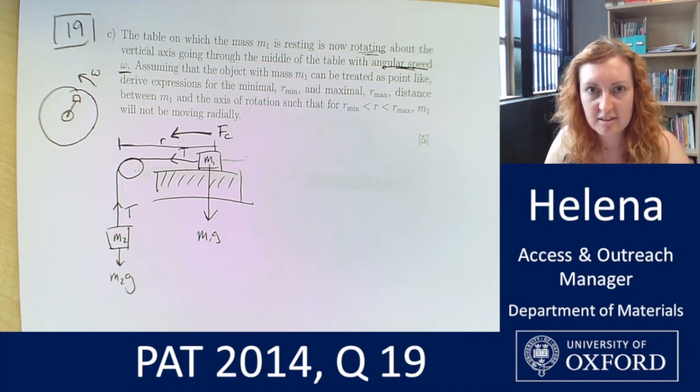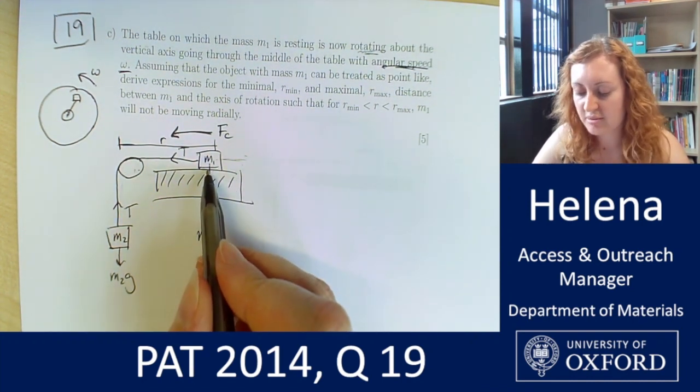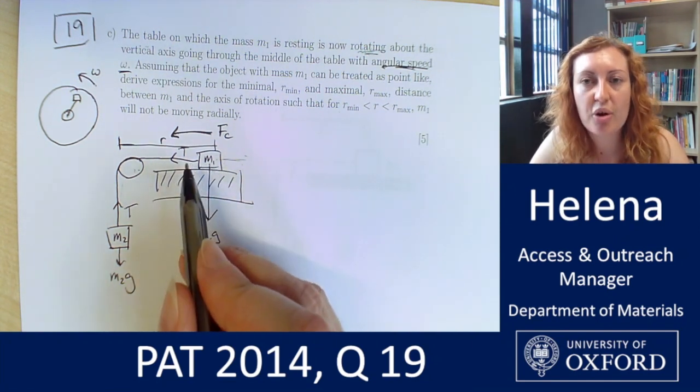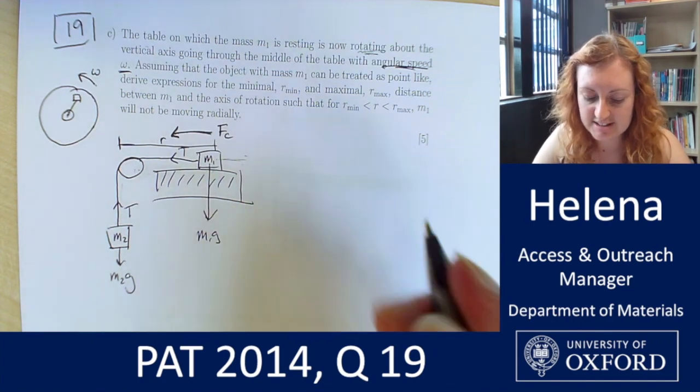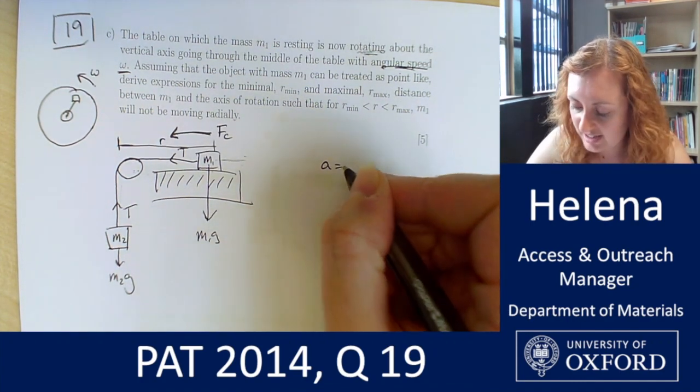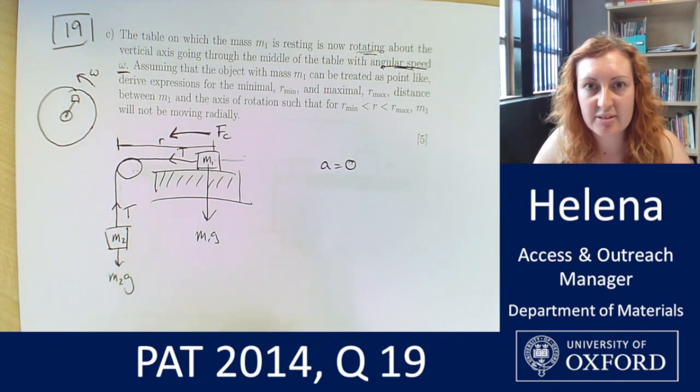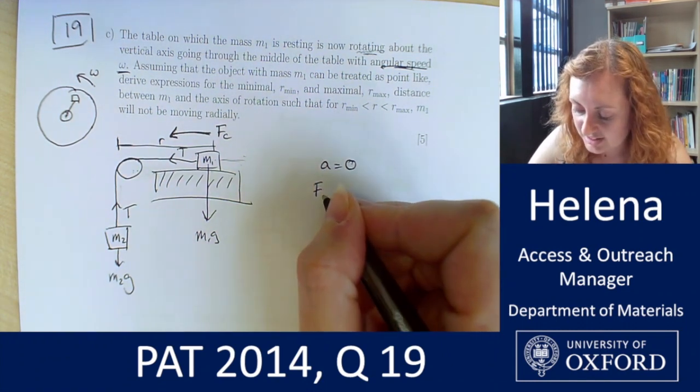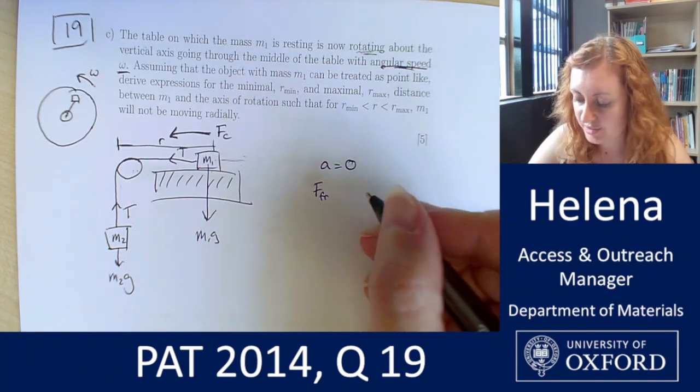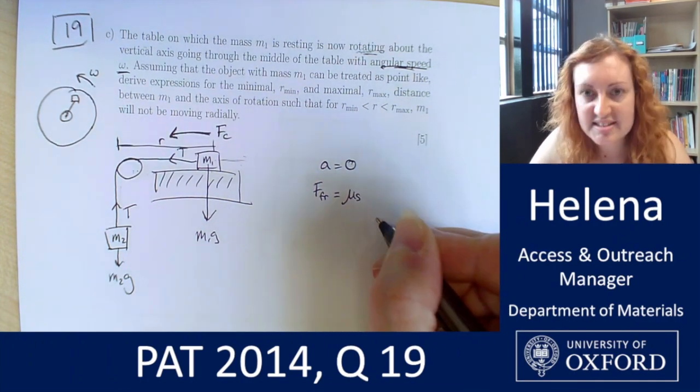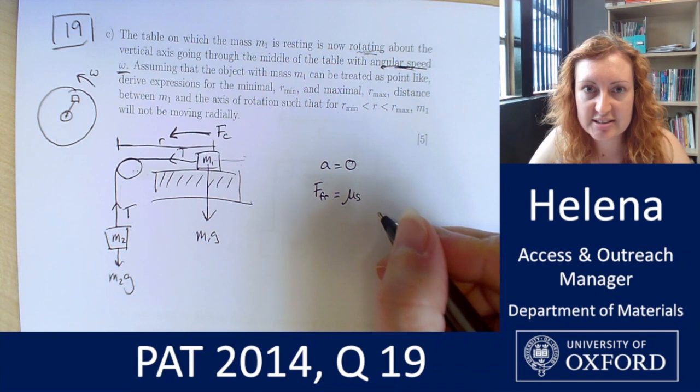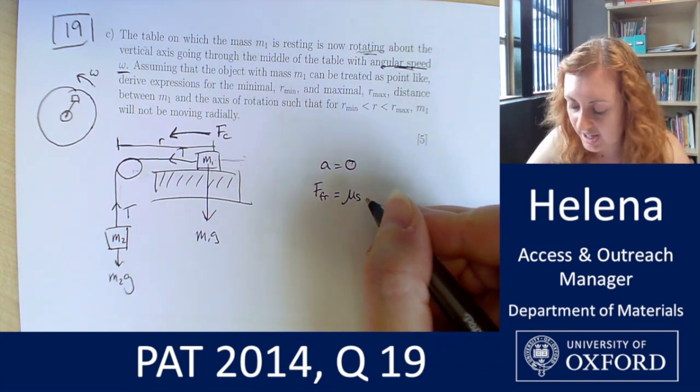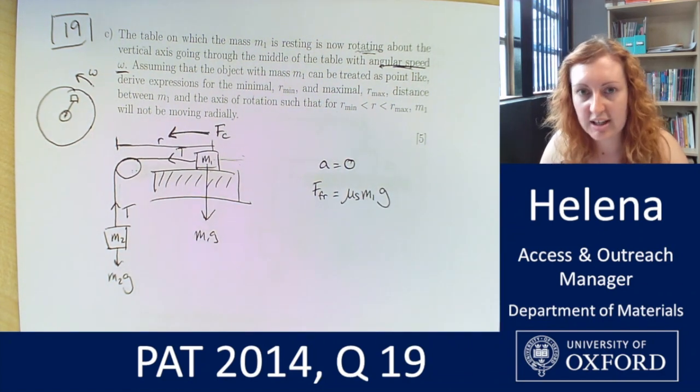And also we need to consider the acceleration, so we don't want our block moving radially, that means we've got no acceleration in this case. So we have that A is equal to zero, no net acceleration. That also means that our frictional force, so we're using the same format of frictional forces before, is going to be using our static coefficient, because we've not got any motion in that radial direction. So it's mu_s M1 g.